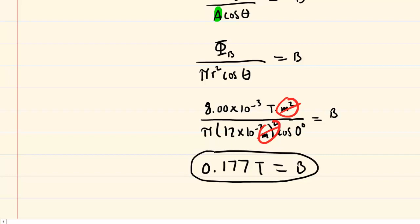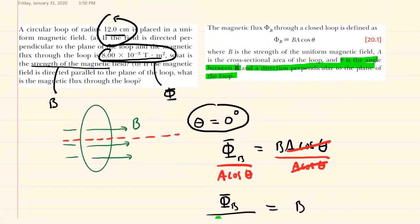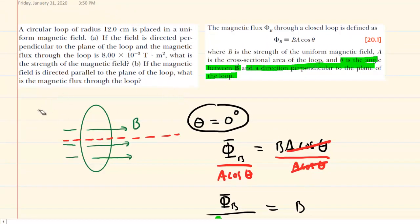In part B we are asked to find the magnetic flux. So this time we're looking for the magnetic flux and in addition the magnetic field is now directed parallel to the plane of the loop.